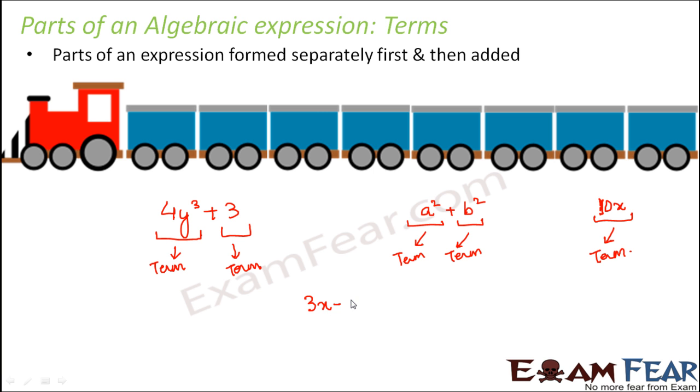Let's suppose you have an expression like 3x minus 9 divided by 2. So how many terms do you have here? In this case, when you look at this expression in this form it looks quite complicated. You might feel that this entire thing is one term, but actually it is not because 3x minus 9 by 2 can be very well written as 3x by 2 minus 9 by 2.